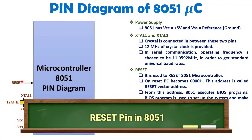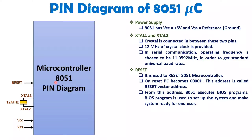The reset terminal is used to reset the 8051. When you reset the 8051, the program counter becomes 0000h, which is called the reset vector address. At that point, it executes the BIOS program to set up the system and make it ready for the user — similar to how resetting a PC causes it to execute a BIOS program.